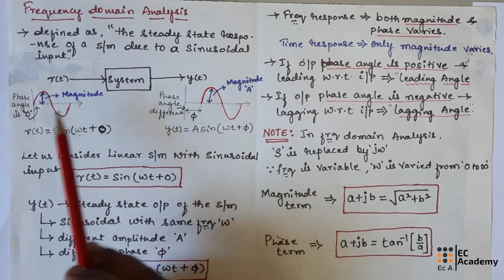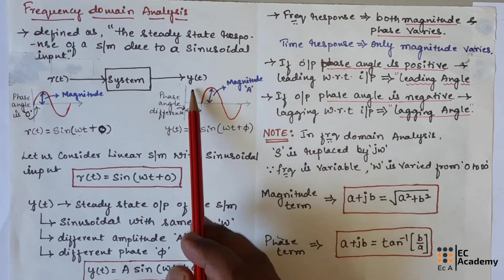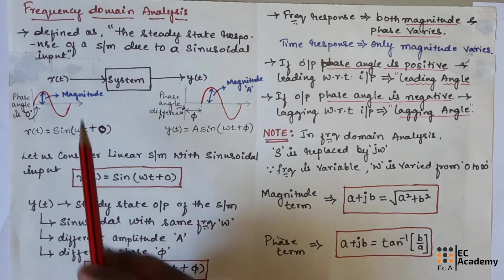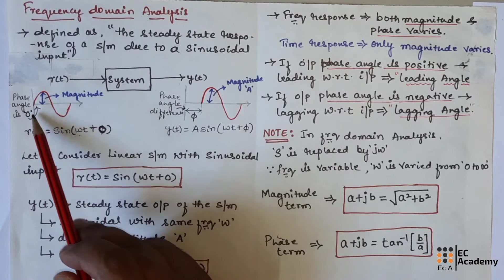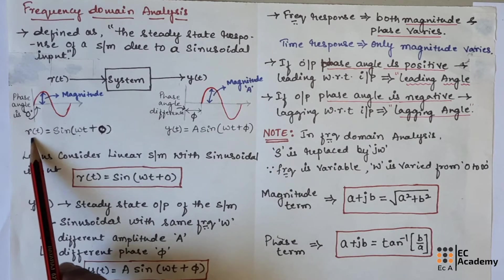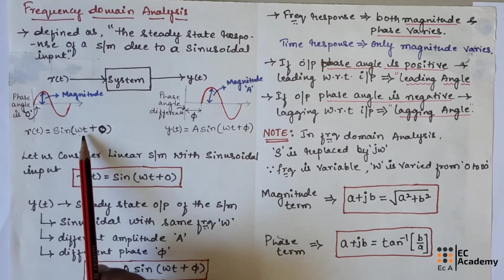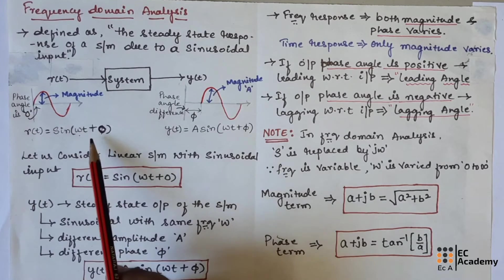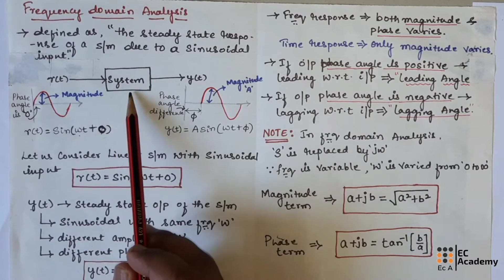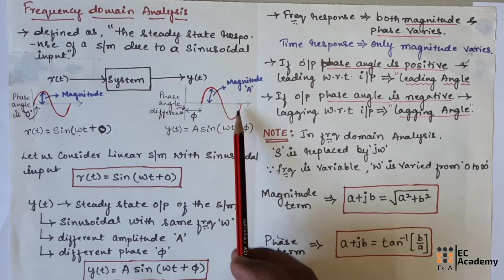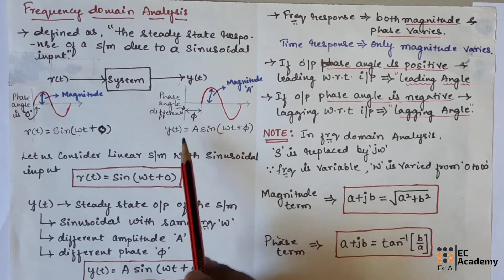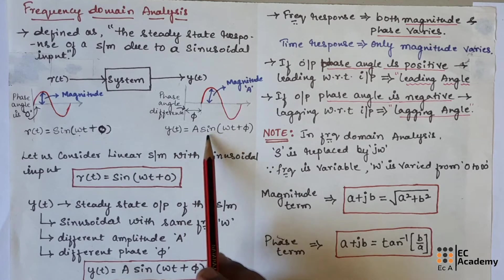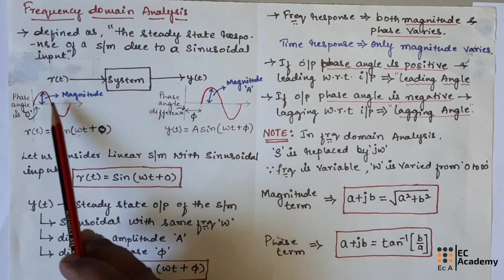Let us consider a linear system with sinusoidal input, which produces a steady state response that is also a sinusoidal output. If we consider input R(t) with magnitude 1 and no phase difference, we can represent it as R(t) = sin(ωt + 0). This input applied to the linear system will produce an output, also a sinusoidal signal, with amplitude A and a phase difference φ. So the output is represented as Y(t) = A·sin(ωt + φ). This is the steady state response of the linear system for a sinusoidal input.